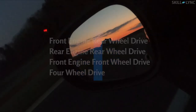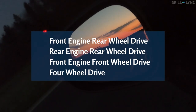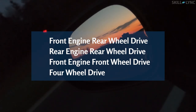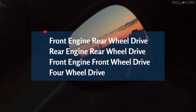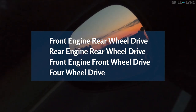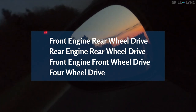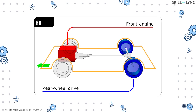In this video we're going to discuss the different types of layouts in automobiles. Commonly used layouts in automobiles are the front engine rear wheel drive, rear engine rear wheel drive, front engine front wheel drive, and four wheel drive. Let's check them out one by one.